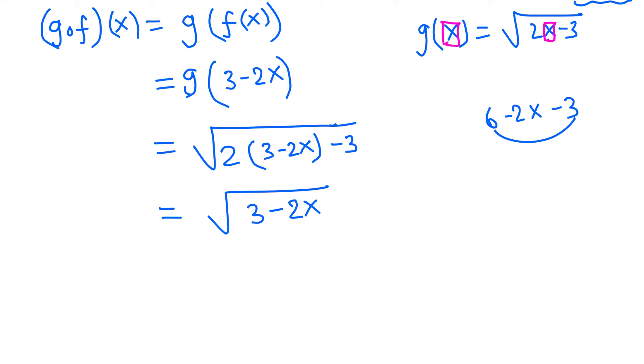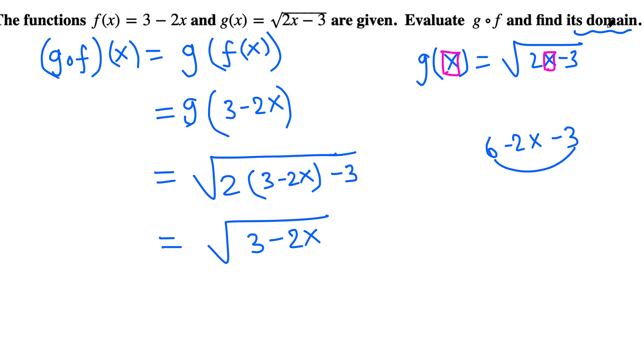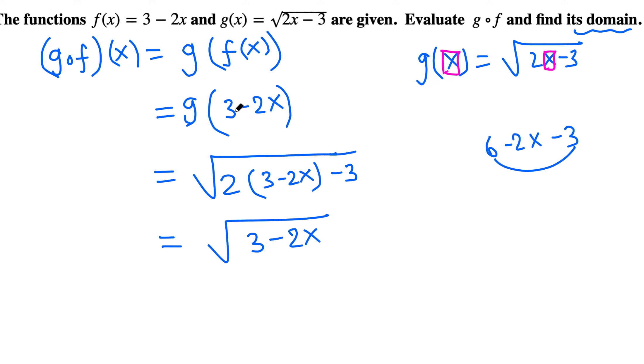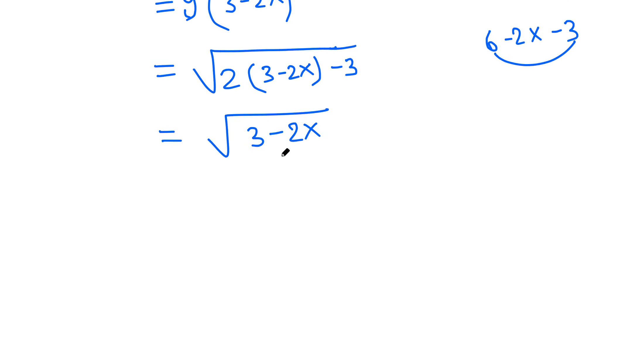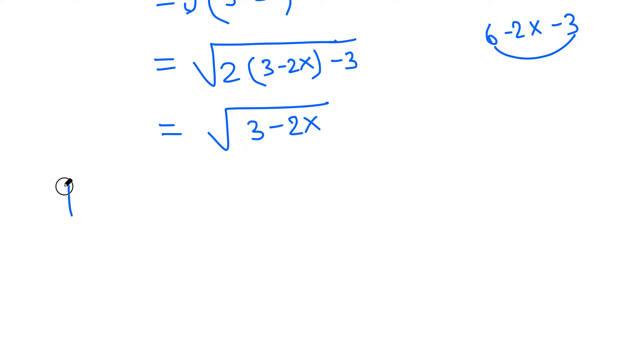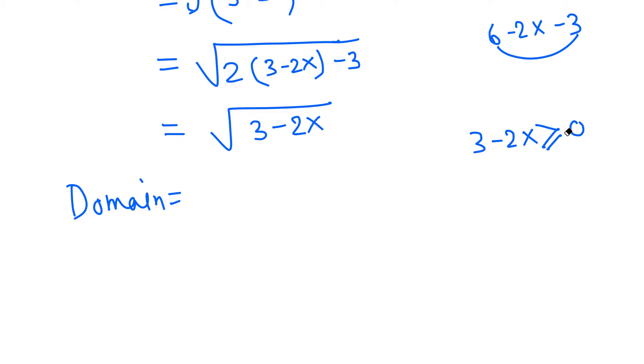Now we want to find the domain. Good thing there is no restriction from earlier. For the domain we want this to be defined. Square root of non-negative numbers are defined, so 3 - 2x should be greater than or equal to 0. It can equal 0 as well because this is not in a denominator.